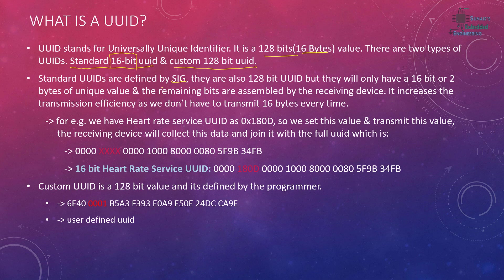The standard UUIDs are defined by the SIG, which is the Special Interest Group — the group that defines the protocol specifications of Bluetooth. They defined a 16-bit value to increase transmission efficiency, because every time we send a service UUID we have to send 128 bits, or 16 bytes of data, which consumes a lot of space in the advertisement packet.